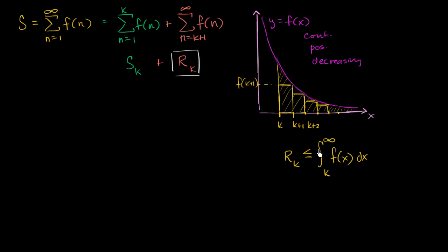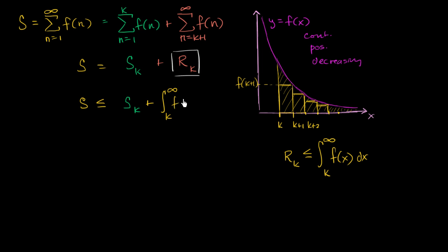That puts an upper bound on r sub k. Since s equals the partial sum plus r sub k, and r sub k is less than or equal to that integral, we can say that s is going to be less than or equal to s sub k plus the improper integral from k to infinity of f of x dx. So just like that, if we're able to compute these two things — which we often are — we're able to put an upper bound on our actual sum.